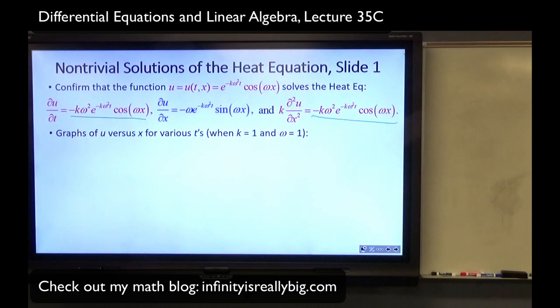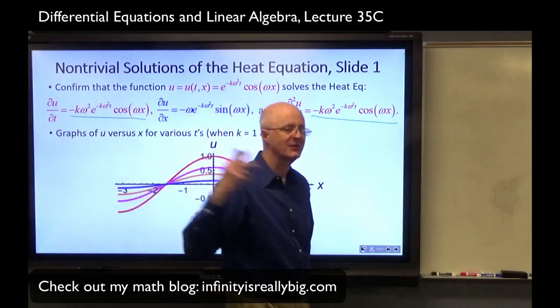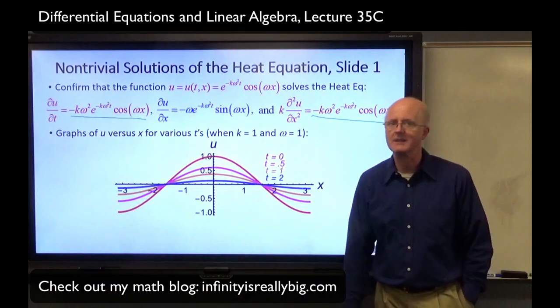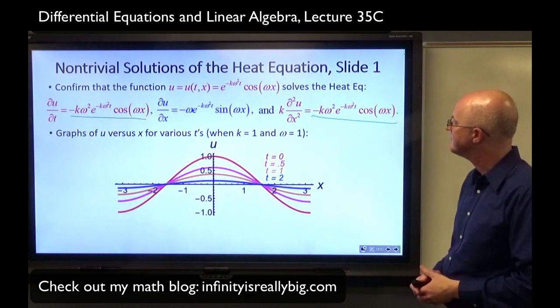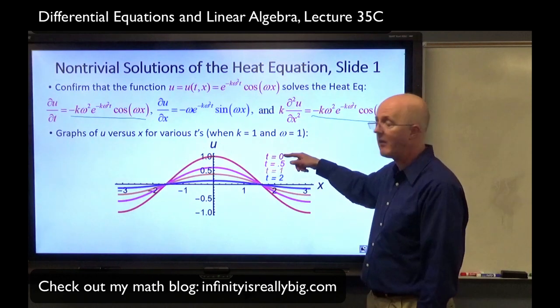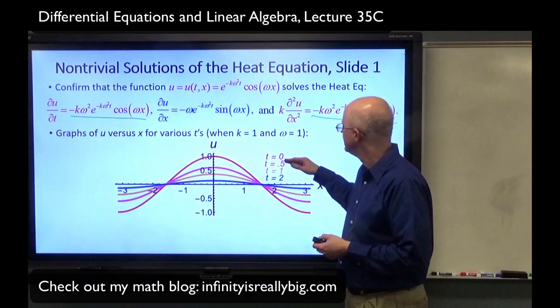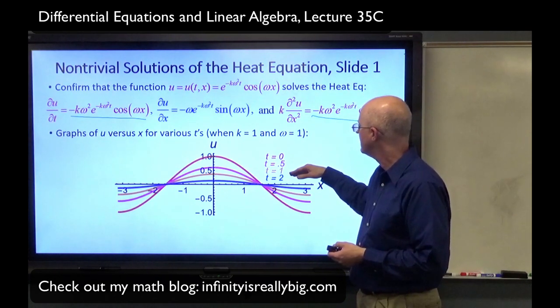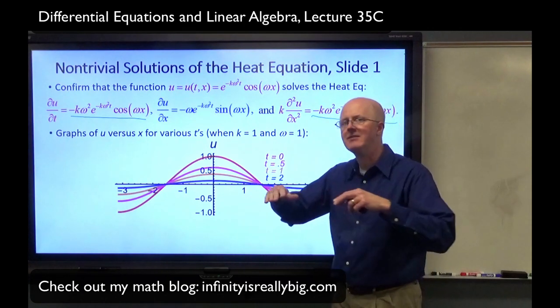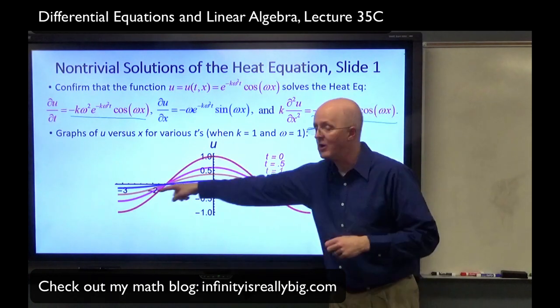Here are some graphs of U versus X for various times T. Taking K to be 1 and omega to be 1, you get a picture that's like this. I graphed it between negative pi and pi, suggestively relating it to lecture 34B, where we were talking about inner product spaces, continuous functions on the interval from negative pi to pi. Red is the initial temperature distribution at T equals 0. It has positive and negative values, so maybe this is in Celsius. Pink, magenta is the temperature distribution at 0.5, time 0.5, orange at time 1, blue at time 2. You can see the temperature evening out over time. Heat is flowing from hot areas toward cold areas in both directions.